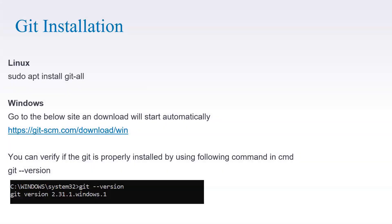Next is Git installation. There are a lot of tutorials and articles available online on how to install Git. On Linux, you can use the command 'sudo apt install git' and that will install Git. On Windows, you can go to the Git website and it will automatically start the download. Once the download is done, go through the normal installation procedure. You can confirm whether Git is installed by running 'git --version', which will show the installed version number.